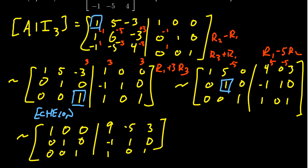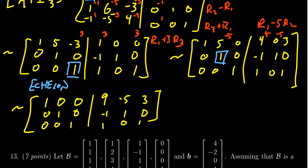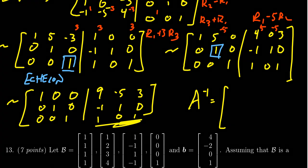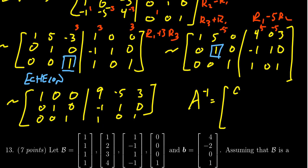Now don't stop here because we haven't actually identified what the matrix is yet. We need to actually be specific. A inverse is equal to the matrix, which we see right here. Again, actually write this down. Don't just assume that I know that you know this one. You got to be explicit here. So A inverse equals 9, -5, 3, -1, 1, 0, and 1, 0, 1. So that's what you would record as your answer on this one.